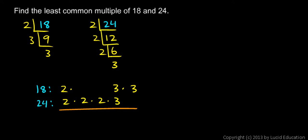So I can draw a line here, and I'll take a 2 times a 2 times a 2 times a 2 times 3 times 3 — and that will be the least common multiple of 18 and 24.